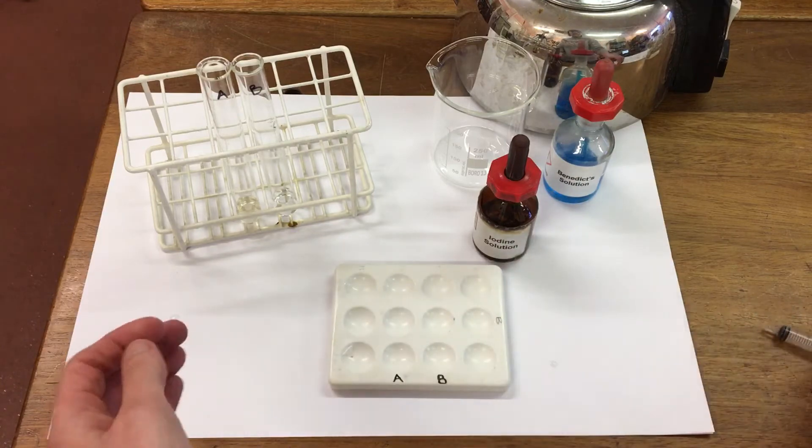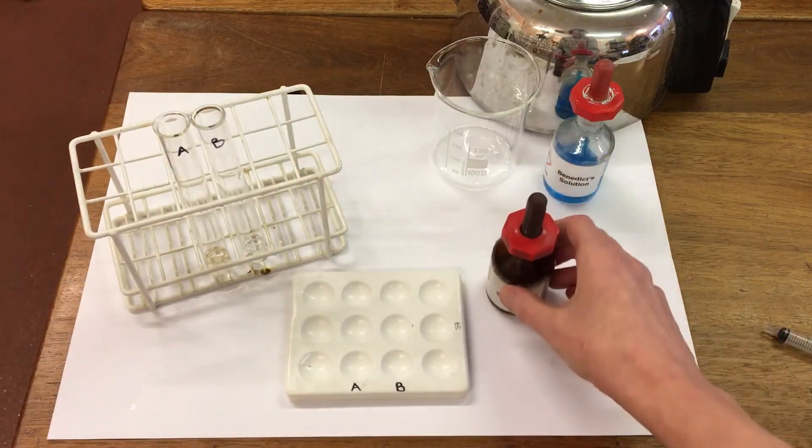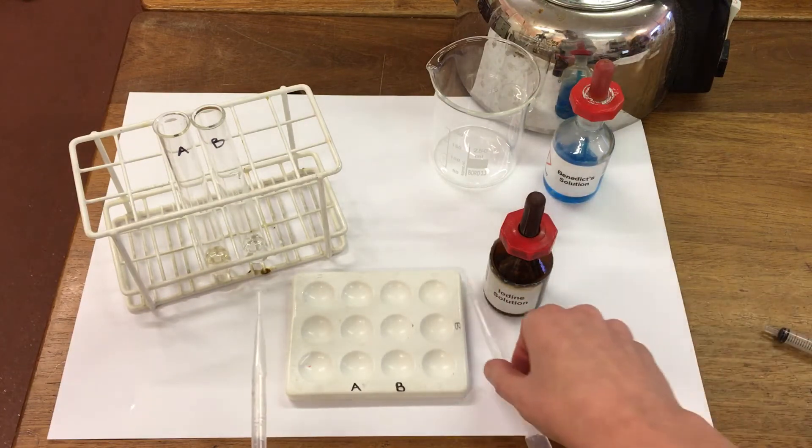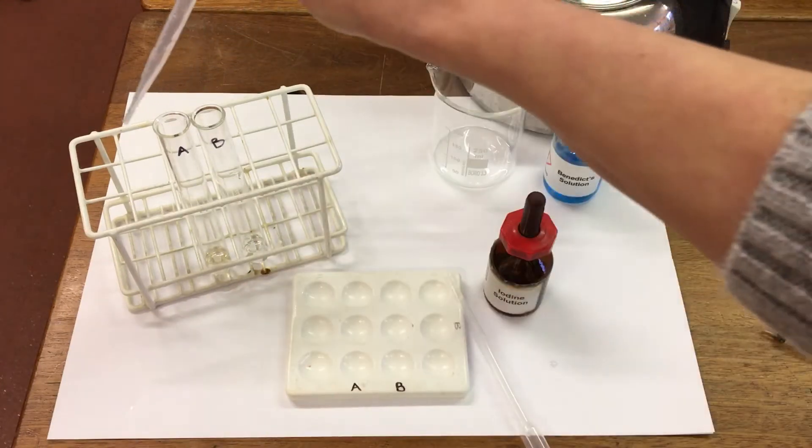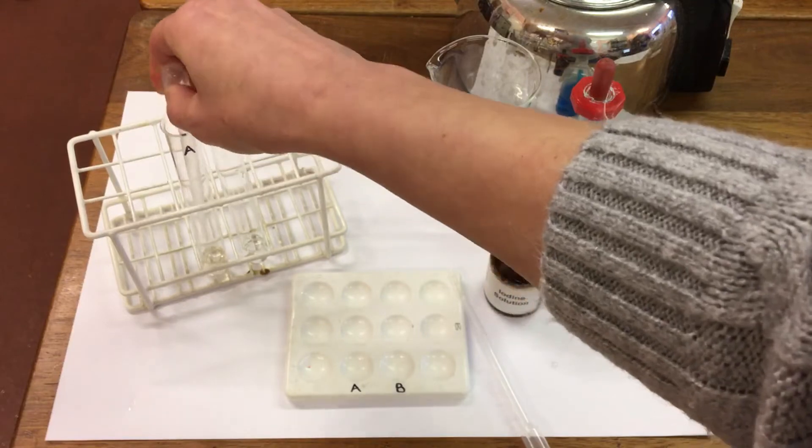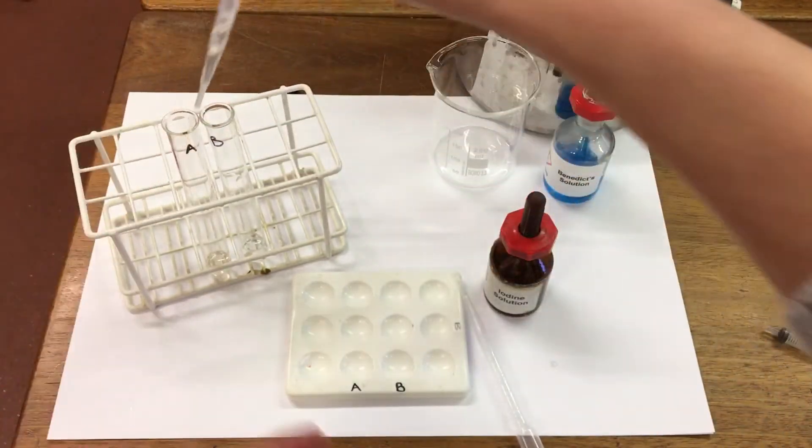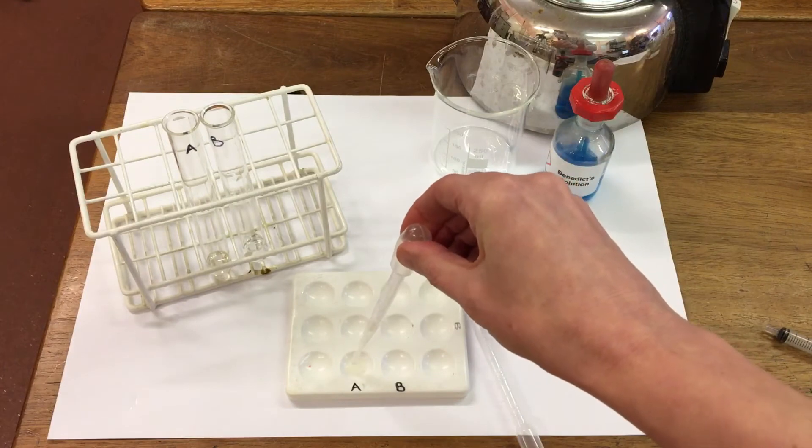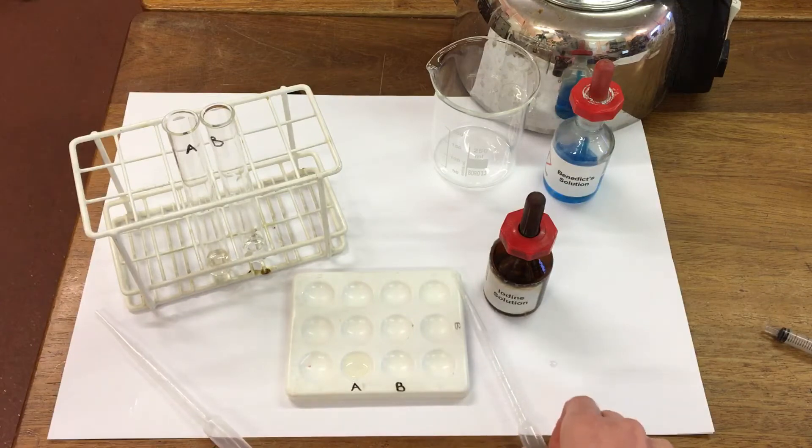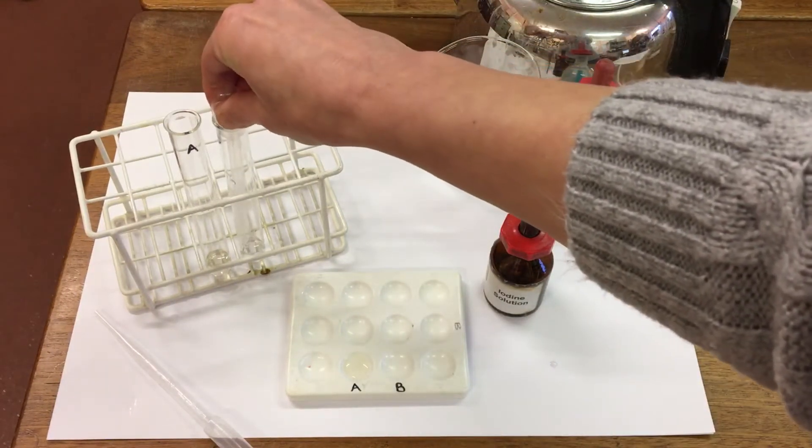First, I'm going to test for the presence of starch using iodine. I'm going to take a couple of drops from test tube A and a couple of drops from test tube B.